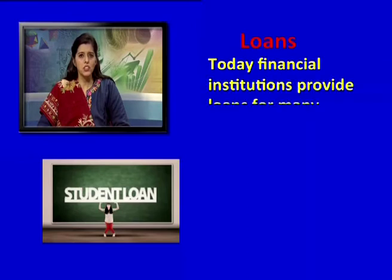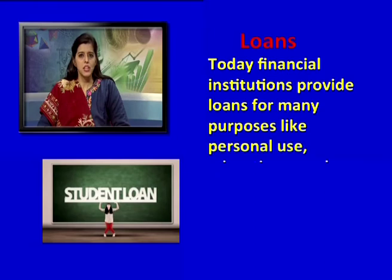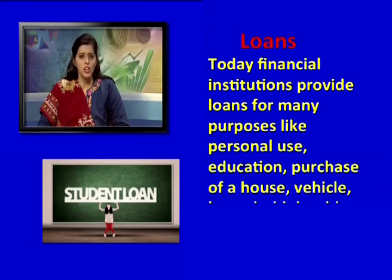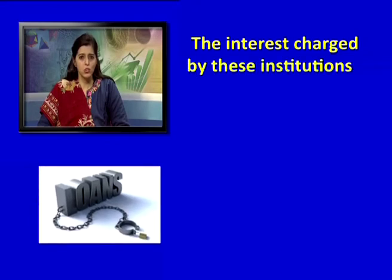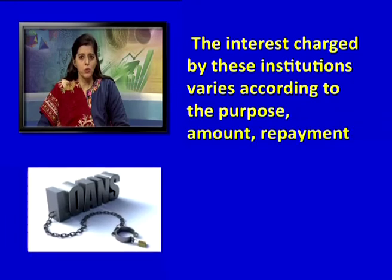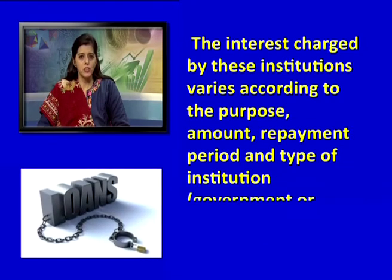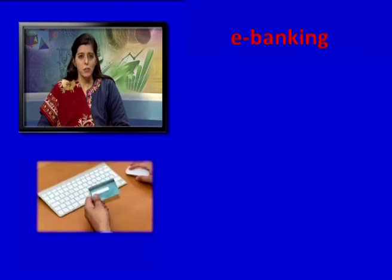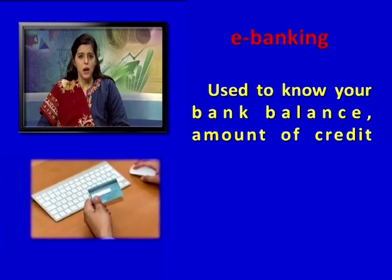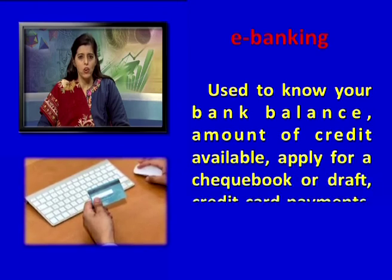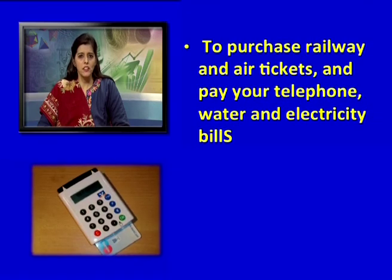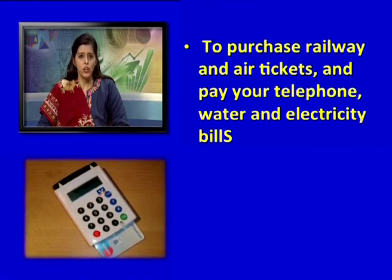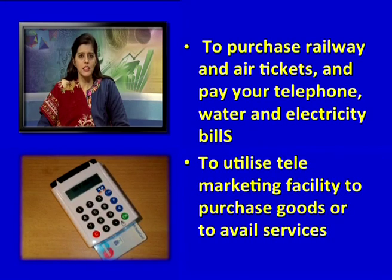Loans: today financial institutions provide loans for many purposes like personal use, education, purchase of a house, vehicle, household durables, and maintenance. The interest charged varies according to the purpose, amount, repayment period, and type of institution — whether government or private. E-banking: used to know your bank balance, amount of credit available, apply for a checkbook or draft, and make credit card payments. You can also purchase railway and air tickets, pay telephone, water, and electricity bills, and utilize telemarketing facilities to purchase goods or avail services through e-banking.